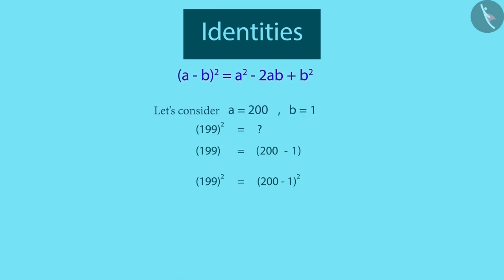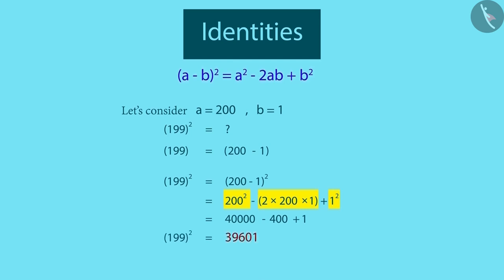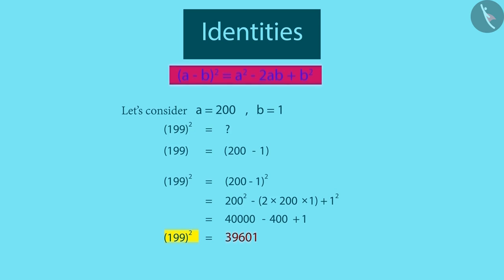Let's consider a equal to 200 and b equal to 1. Now, substituting this on the right-hand side, we get 200 raised to the power of 2 minus 2 multiplied by 200 multiplied by 1 plus 1 raised to the power of 2. We can see that calculating these three terms is very easy. After further simplification, we see that to find the square of such numbers, we can use this identity.